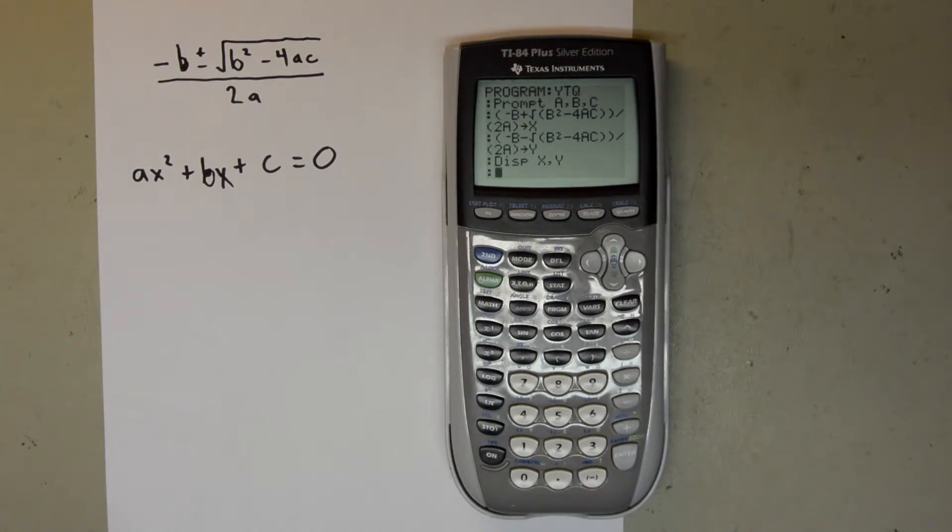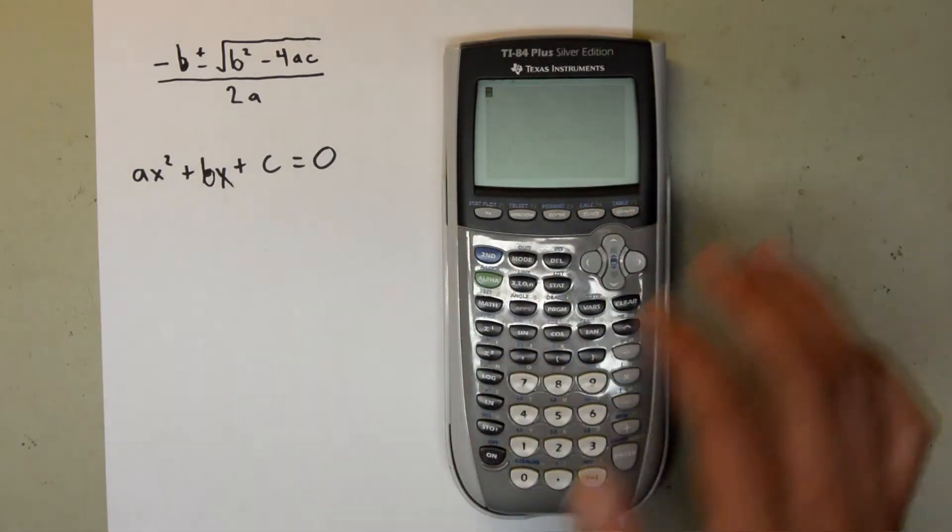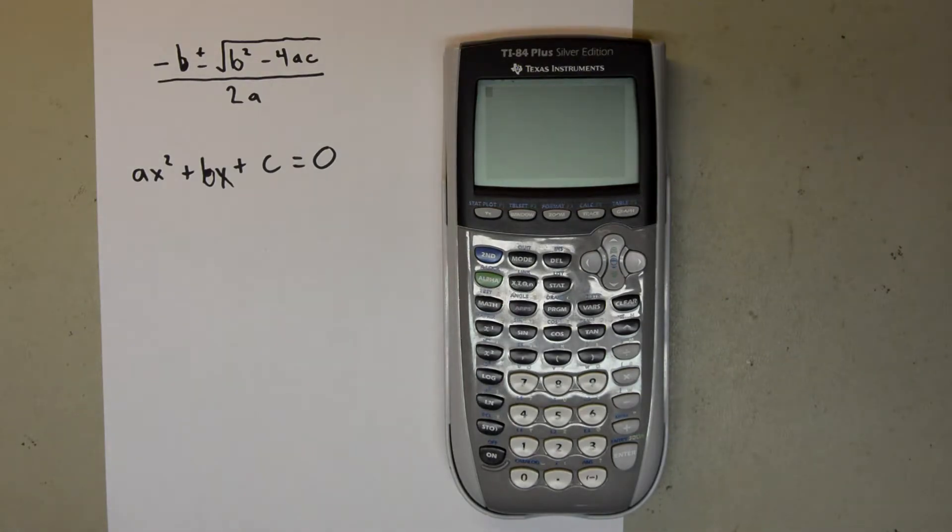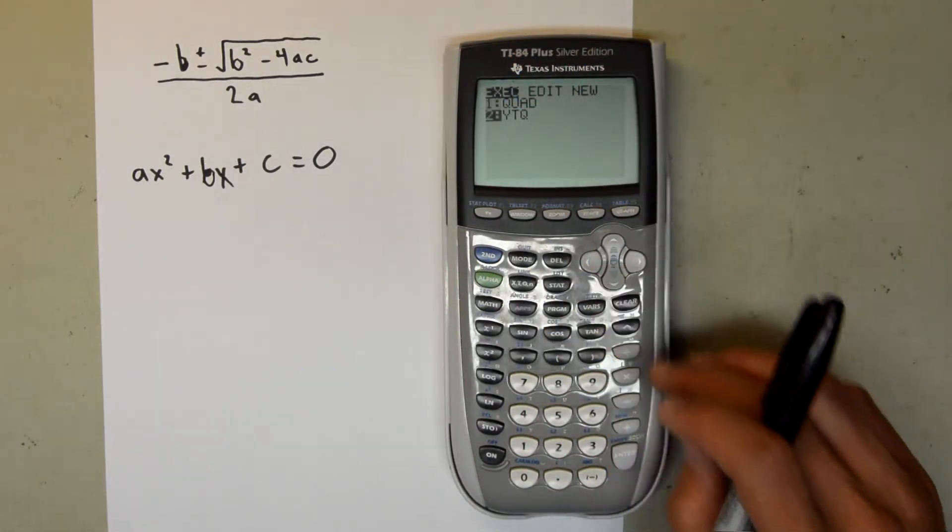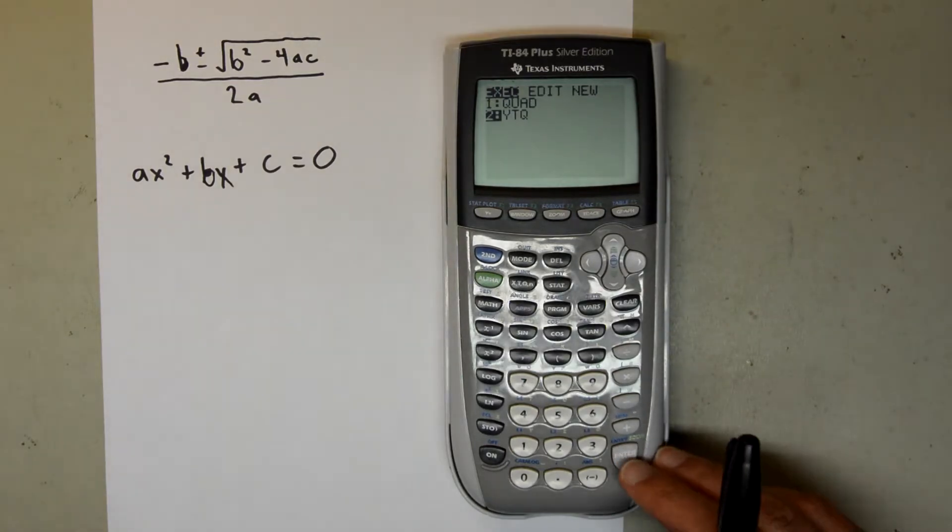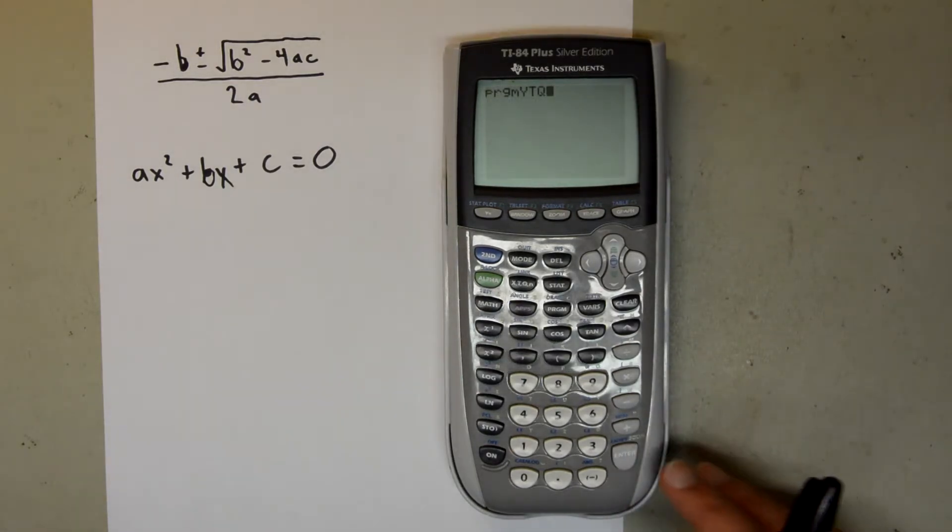So now you have officially made your quadratic formula program, and now I want to show you how to use it and prove that it works. So you're going to hit second quit to get out of that completely. To use it, you want to hit program, and then choose your program in the execution menu. We're going to click YTQ, and then hit enter.